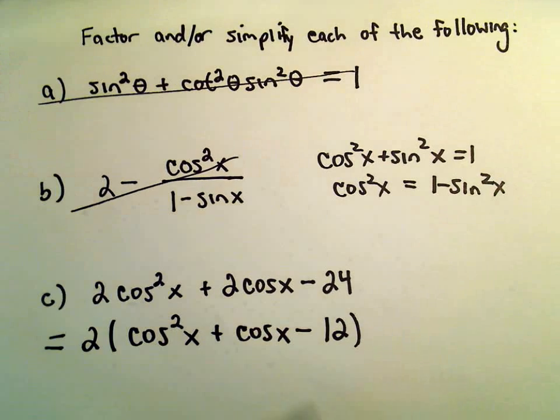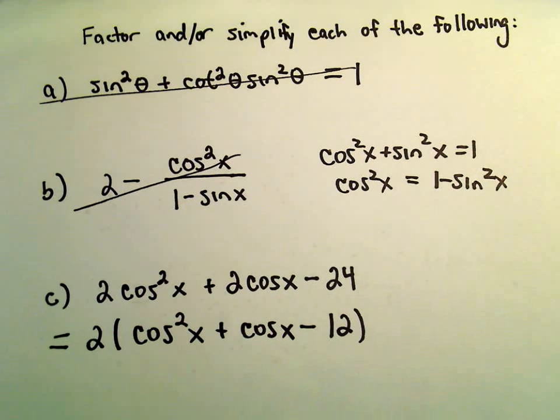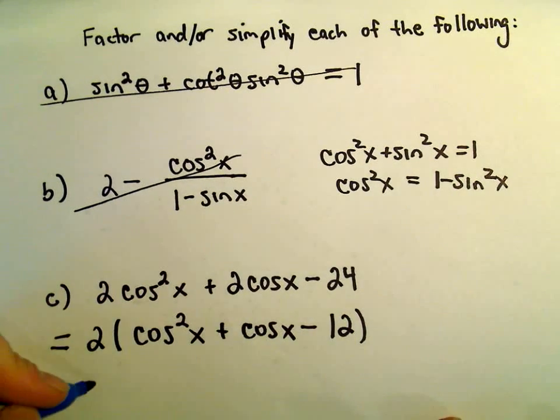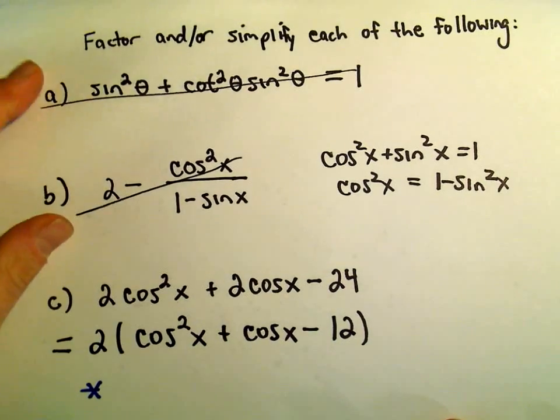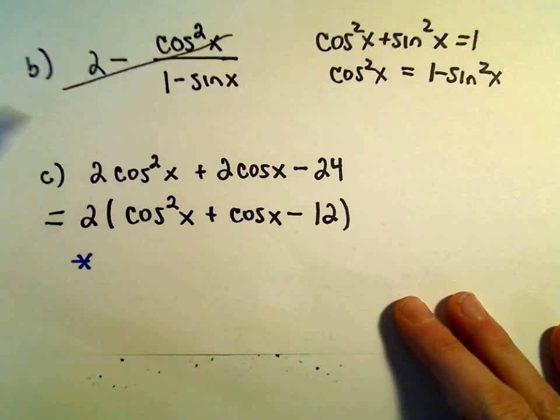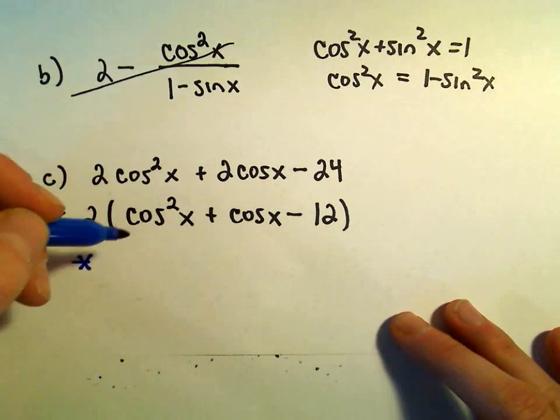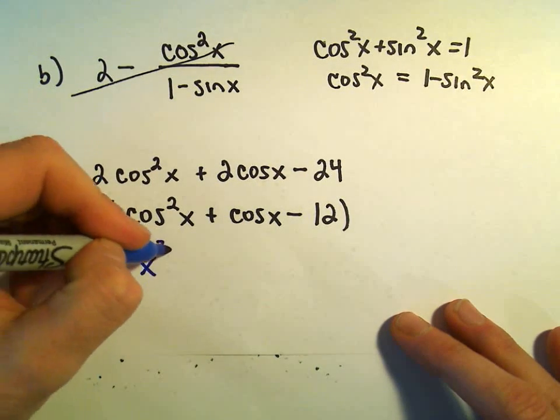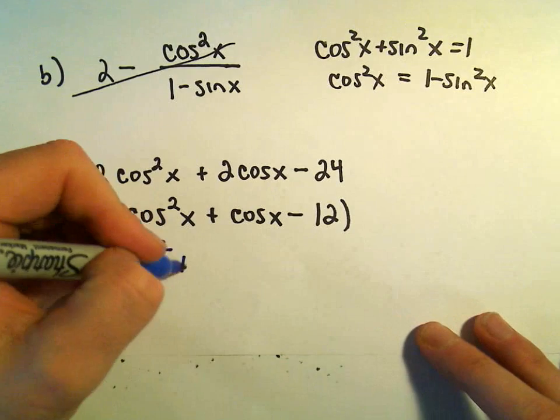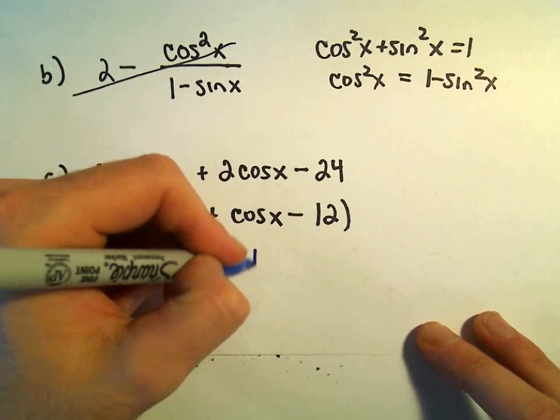But I think we can factor a little further at this point. What I see here is something that looks very much quadratic. When we think about cos²x + cosx - 12, that really says you've got something squared plus that same thing minus 12.